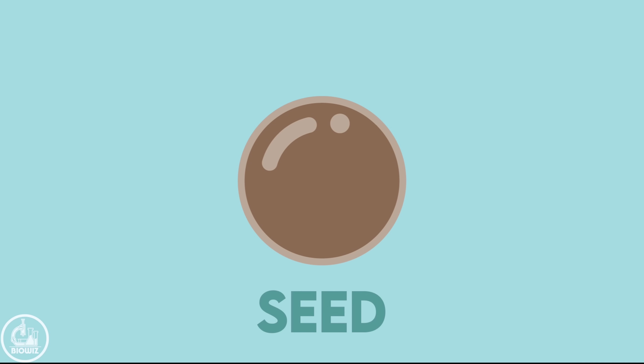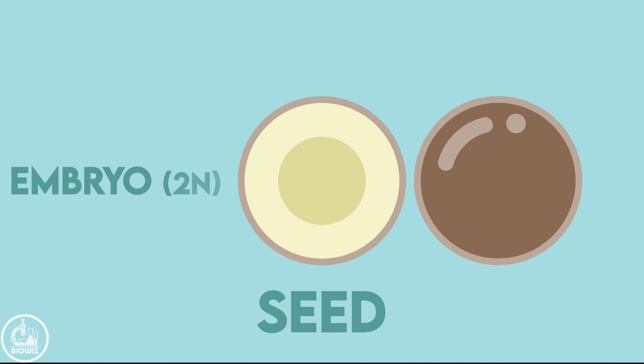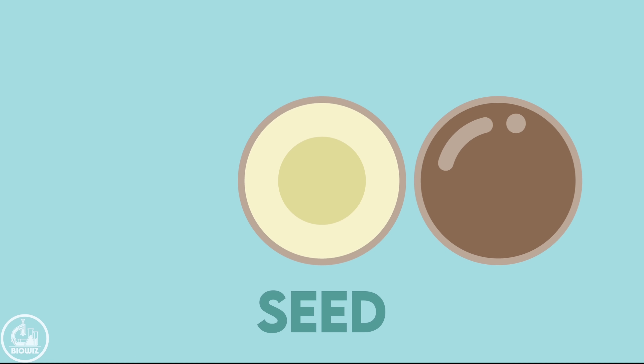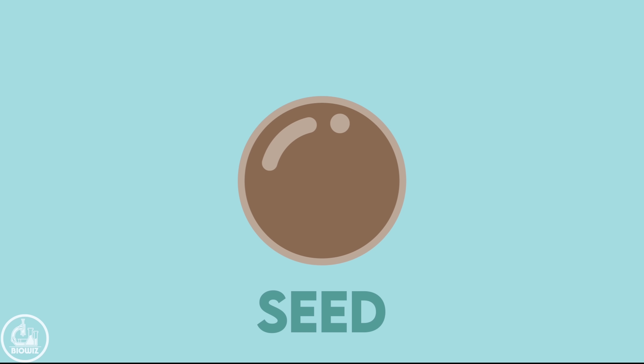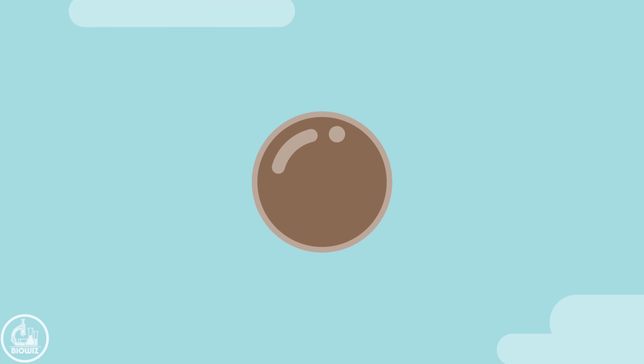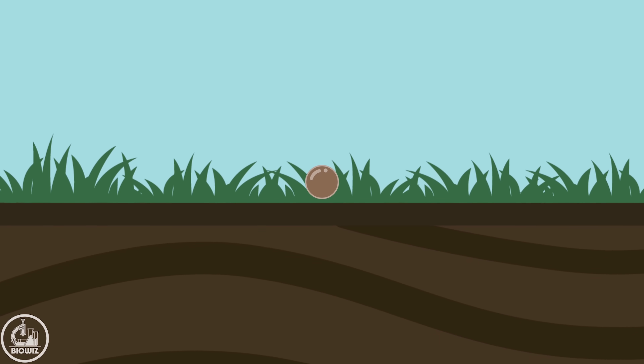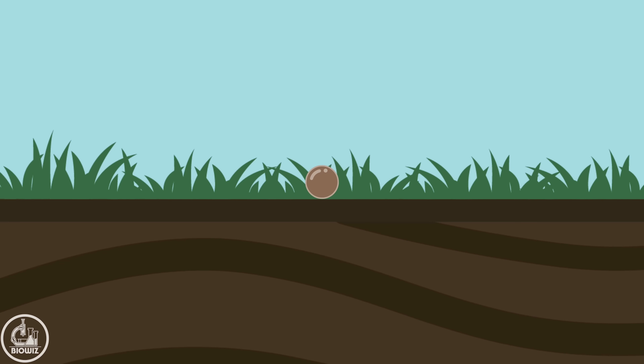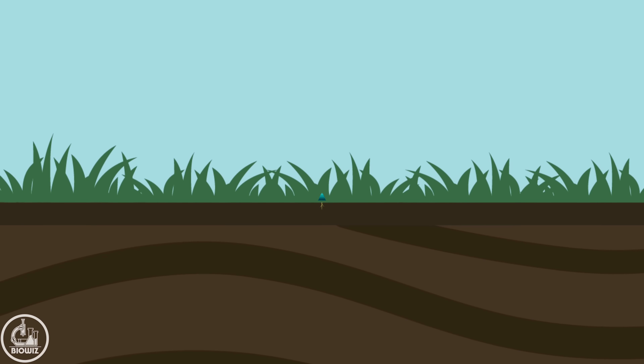Just like angiosperms, the life cycle of gymnosperms also starts with a seed. The seed is a protective structure which contains the diploid embryo, covered inside a protective covering called the seed coat. This seed, on finding suitable conditions, starts to germinate and develops into a tall tree, which represents the well-developed sporophytic body of gymnosperms.